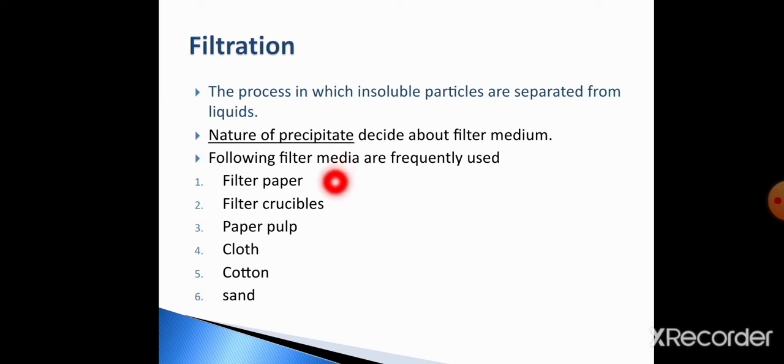And for filtration, we may use different types of media. Like we can use filter paper, filter crucibles, paper pulp, cloth, cotton and sand. We may use one of these filter media. The type of filter media used depends upon the nature of precipitate which are present in a given solvent.